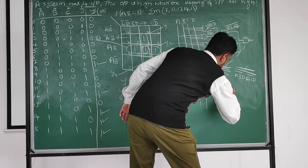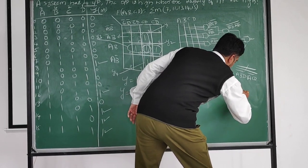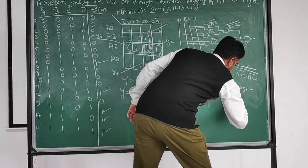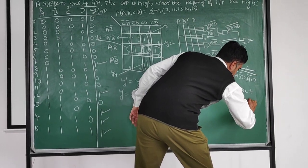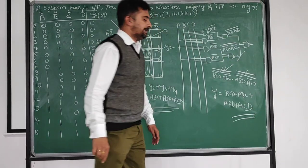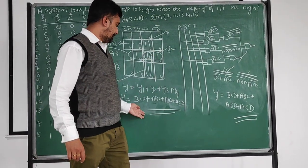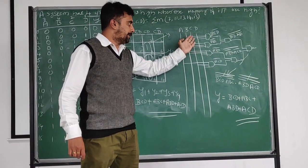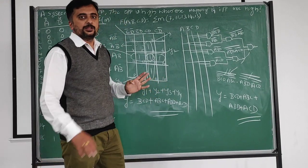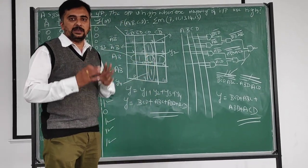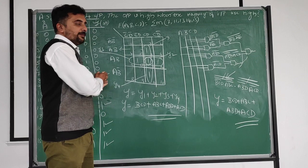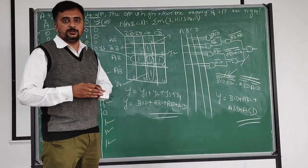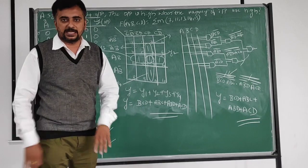According to De Morgan's theorem, BCD into ABC into ABD into ACD-bar gives Y equals BCD plus ABC plus ABD plus ACD. So this is the final answer. By seeing this expression step by step, we draw the circuit. If you have any doubts regarding this problem - this is a very important problem - please message me in the comment box. Thank you one and all for listening to this video.